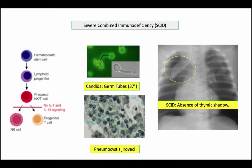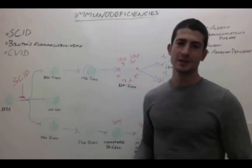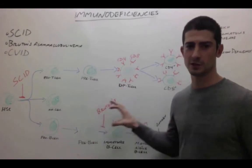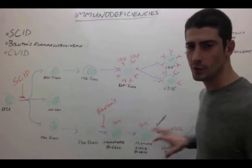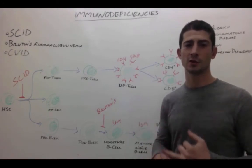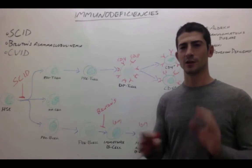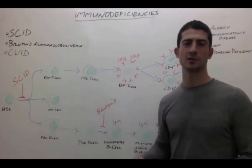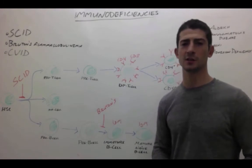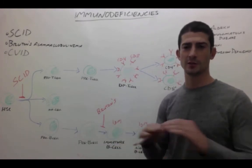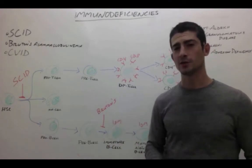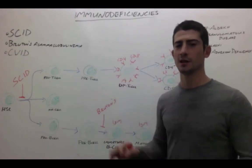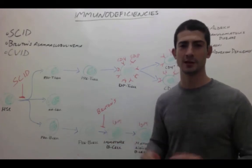Let's continue now with Bruton's agammaglobulinemia. Bruton's X-linked agammaglobulinemia is caused by a deficiency in Bruton's tyrosine kinase, which inhibits maturation of pre-B cells to immature B cells. As a result, you have no mature B cells at all, no B cells in circulation, and no circulating immunoglobulins. It usually presents around six months of age, and the child will start getting recurrent bacterial infections. You still have your T cell lineage to address viral infections, but you have no B cell function at all. It doesn't present for the first few months because the mother's IgG is able to cross the placenta, protecting the baby's immune system for that period of time.